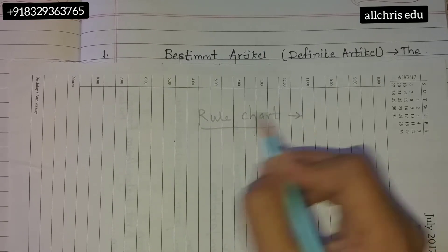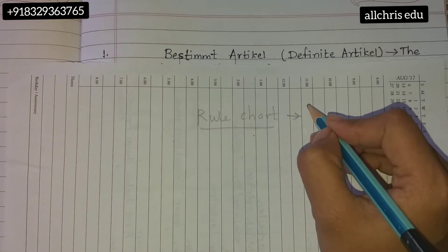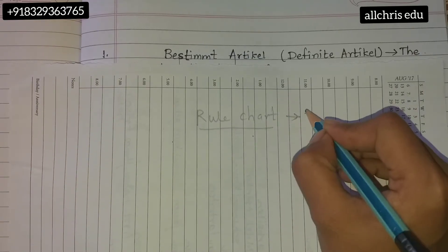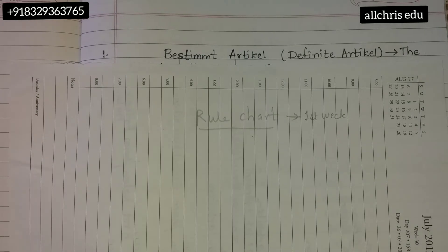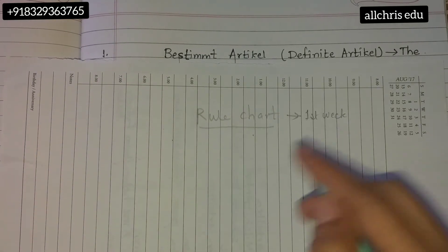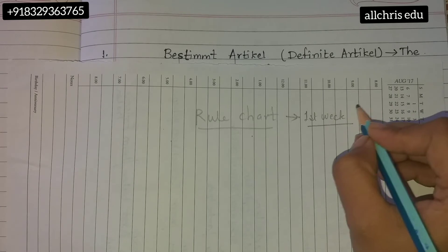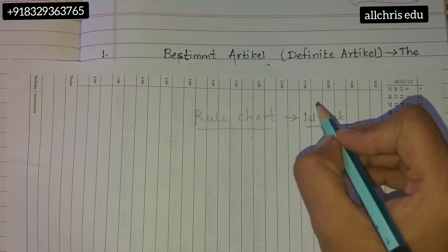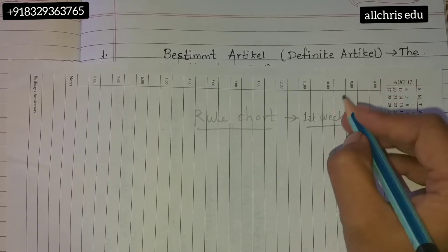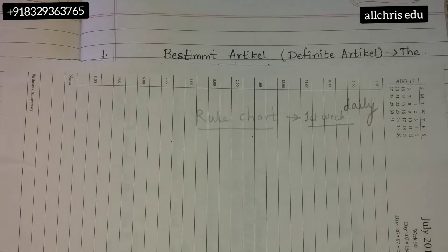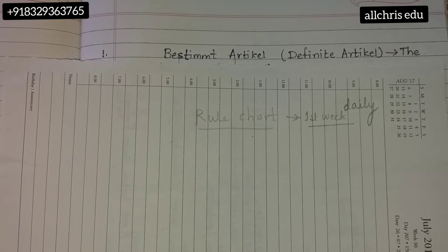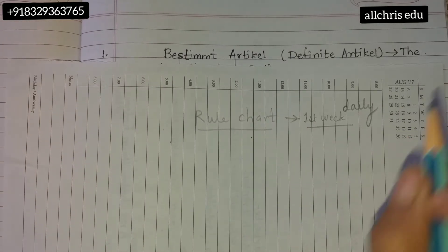This rule chart has to be written when you first start — in the beginner stage. For example, from today till one week ends, you can write this rule chart in your homework notebook on a daily basis. It is like medicine which should be taken at the right time and in the right amount.